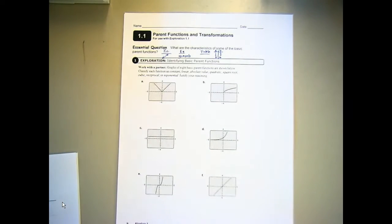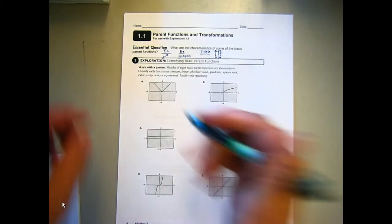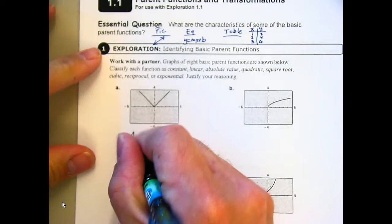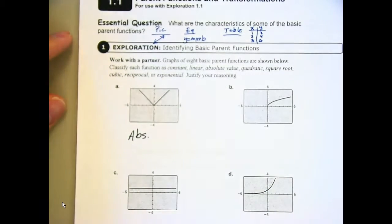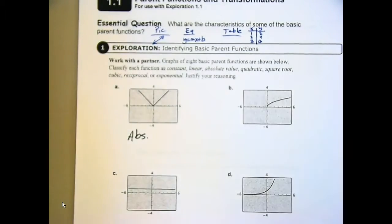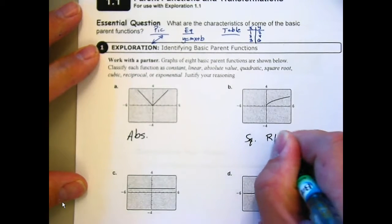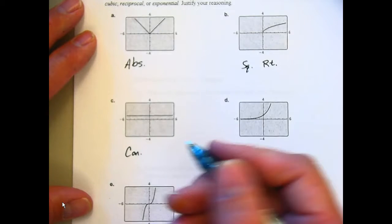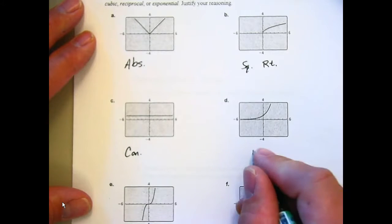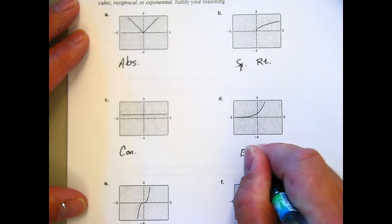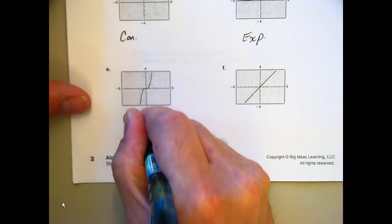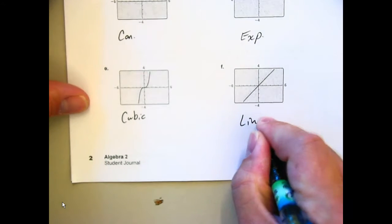Okay, here we go. Letter A, what did we get? Absolute value. Okay, so I'm going to abbreviate abs. How about B? Square root. Okay, how about C? Constant linear. Constant. Okay. Linear. Well, it is linear. How about D? Exponential. Exponential. How about E? Cubic. How about F? Linear. Linear. Alright.